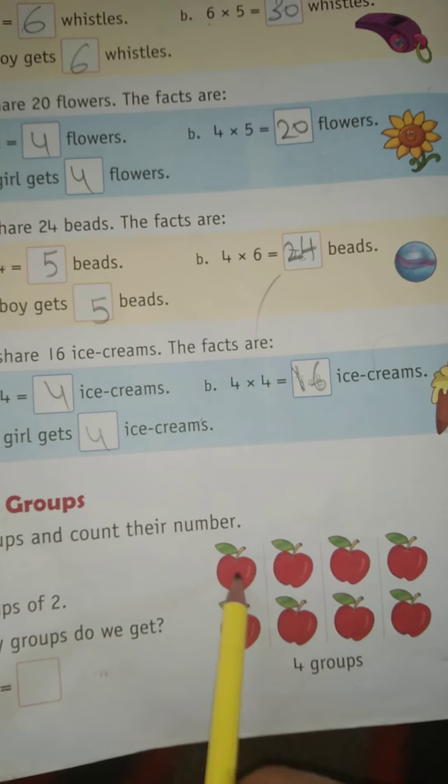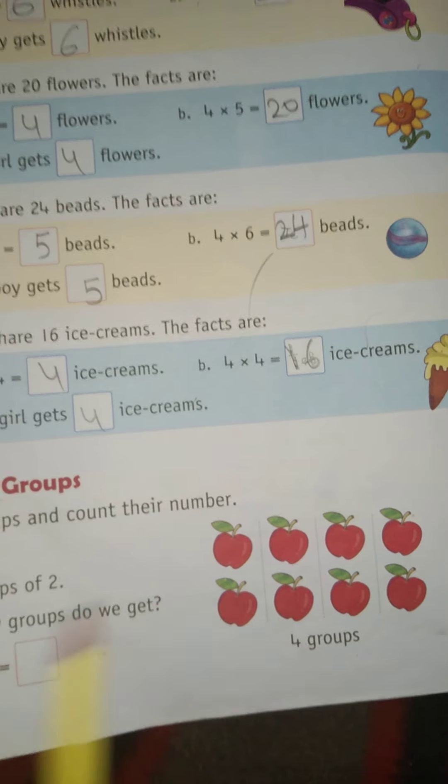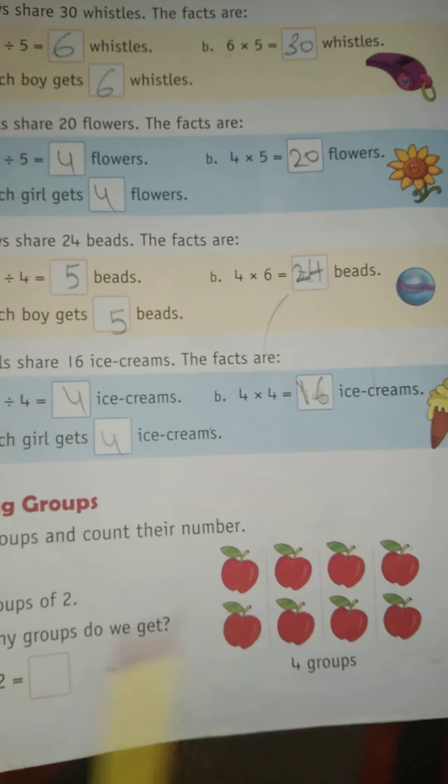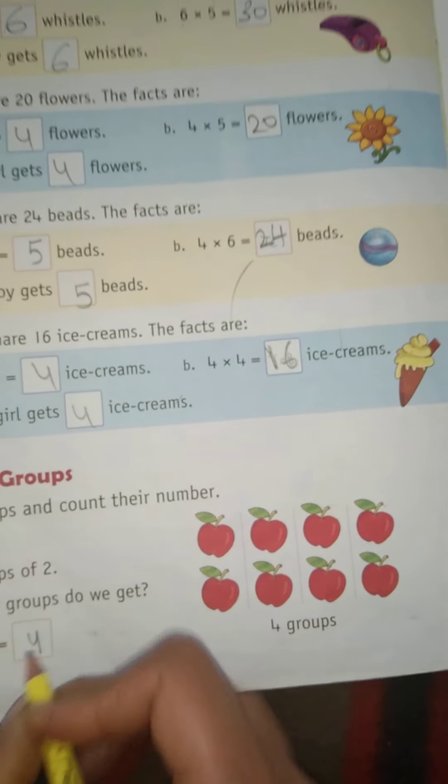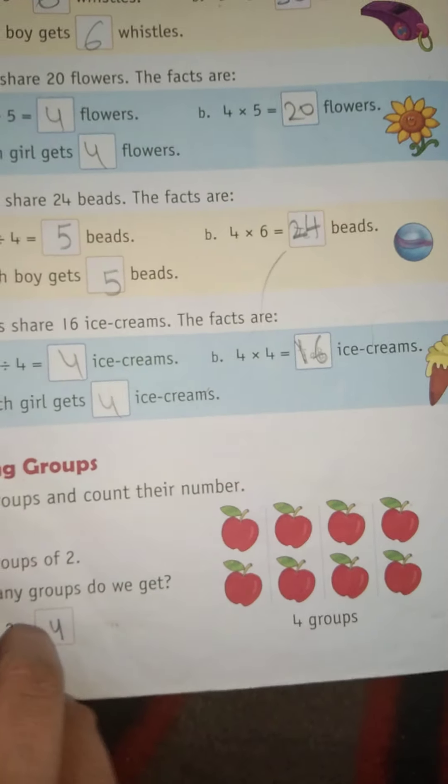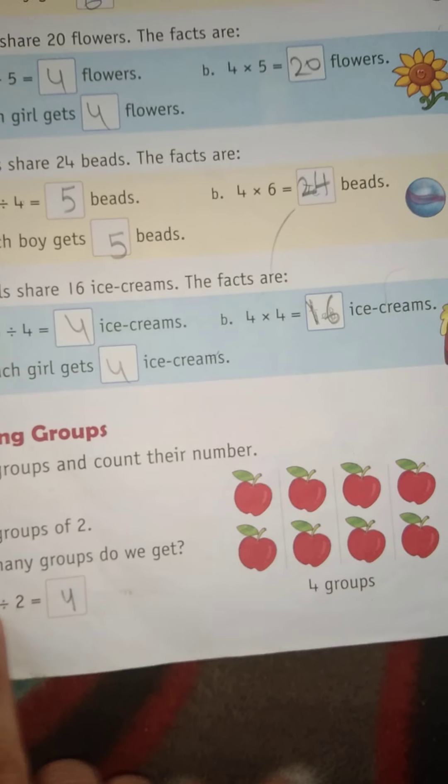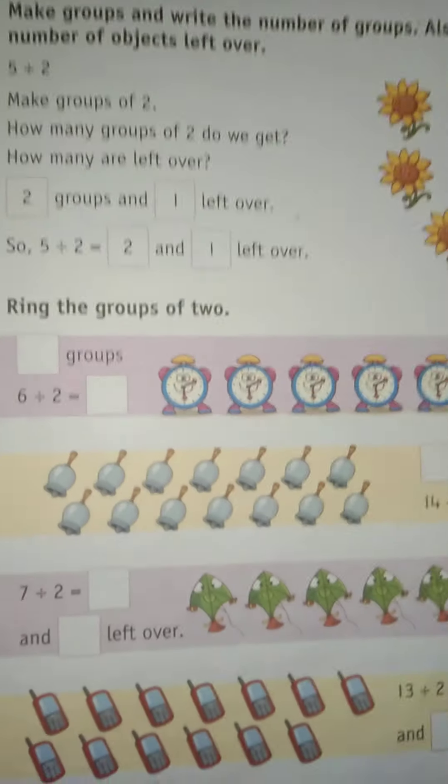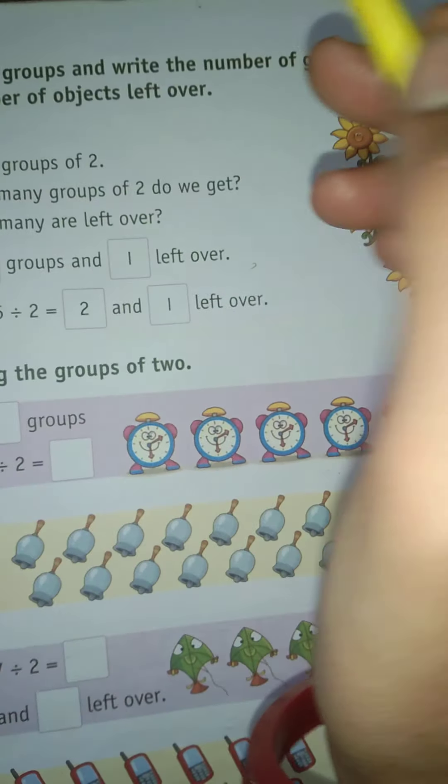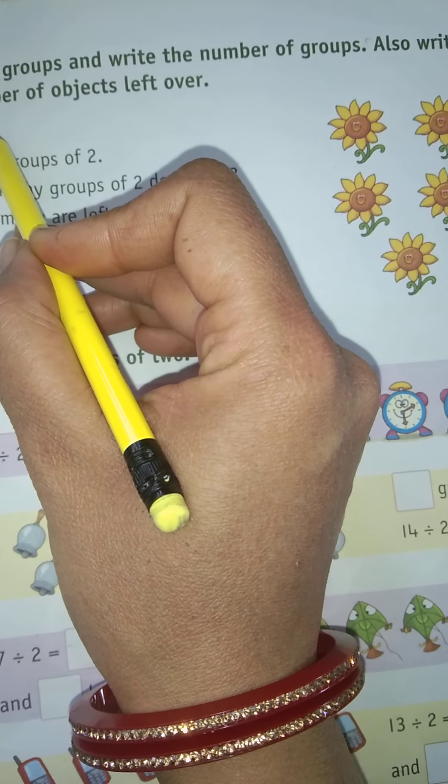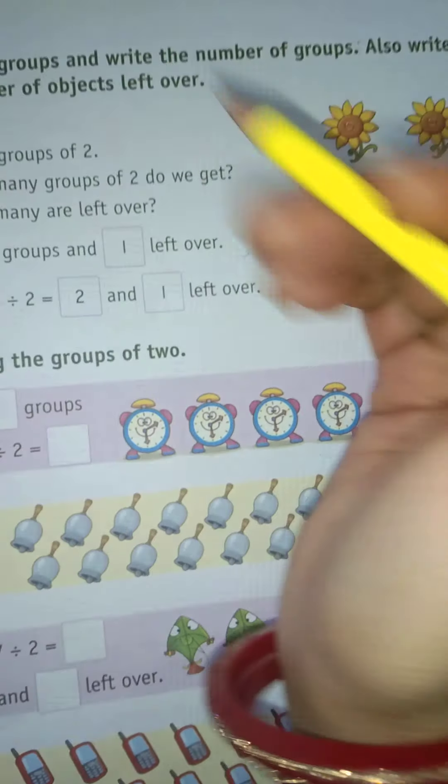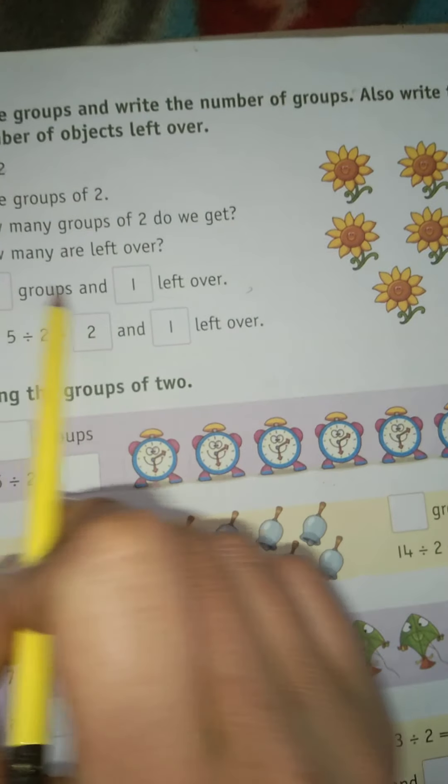Making groups: one, two, three, four, five, six, seven, eight. Eight apples. How many groups do we get? 8 divided by 2 equals... two groups.